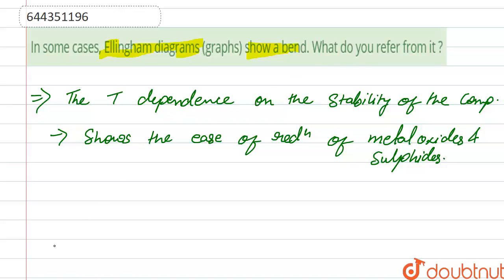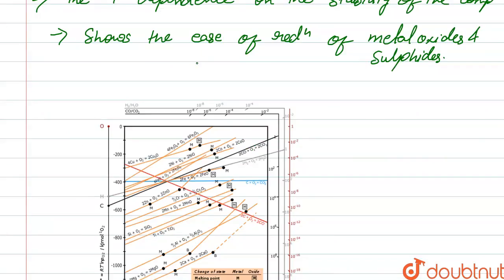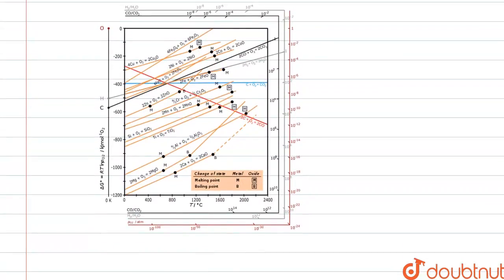So if we see the diagram, here this is the diagram of Ellingham, or you can say that it is an Ellingham diagram. Here it is the diagram between temperature and delta G. So in this diagram, you can see some graphs are bent.